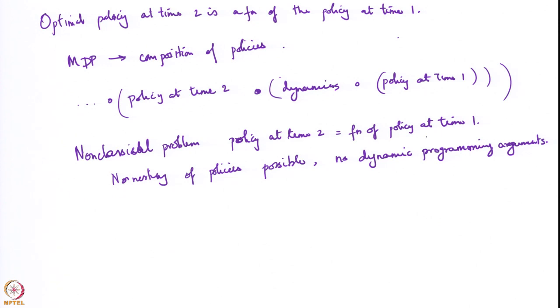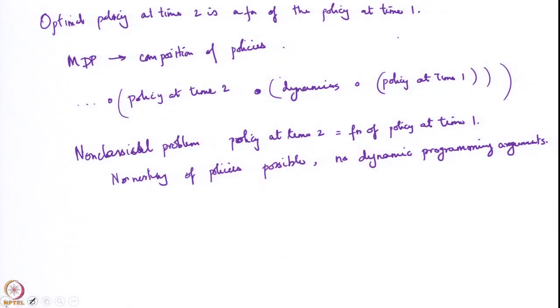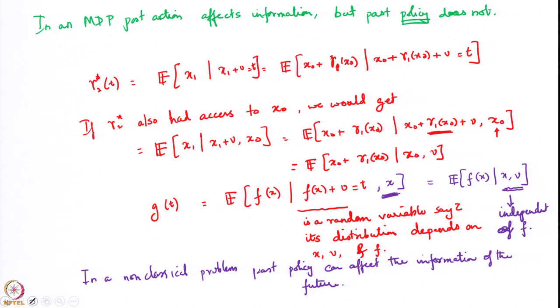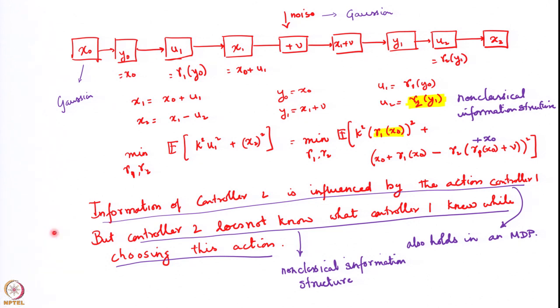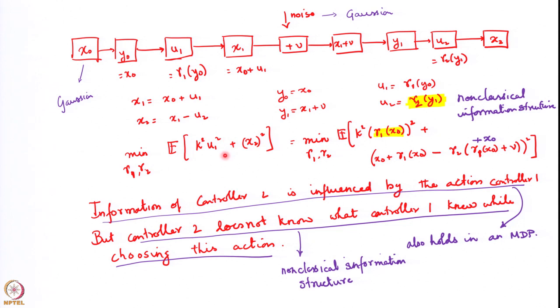This therefore becomes the enormous complexity discussed in the previous lecture. The other thing that manifests in the Witsenhausen problem is this: the policy of the past affects the information of the future, but the policy also has its native purpose — to minimize the cost. So the policy ends up having two roles to play. On one hand it has to minimize the cost term, and on the other hand it also has to convey the right amount of information to the future, since it is implicitly present in both terms.